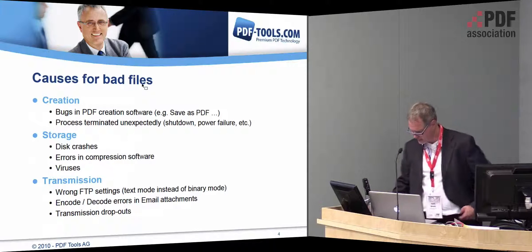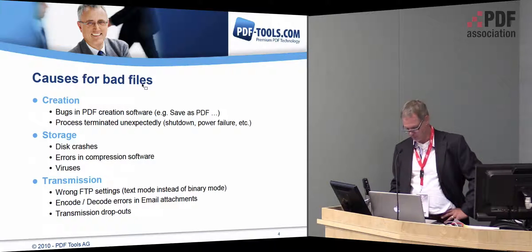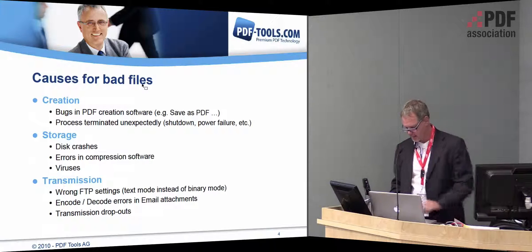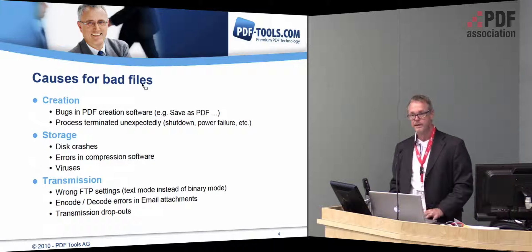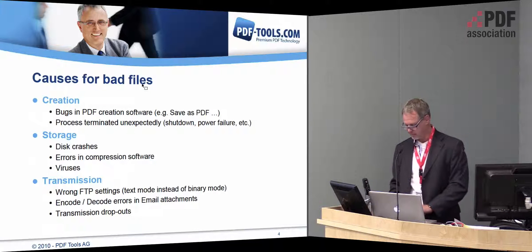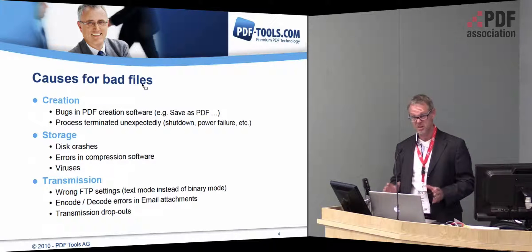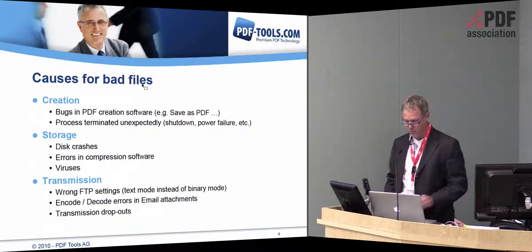If the repair tool is aware of the nature of corruption, it can carry out specific fixes. For systematic errors, if the creator software is known, the tool can find and fix typical errors such as missing mandatory directory entries, systematically wrong object structures, badly formatted fonts, and the like. For unwanted modification, a PDF file created in ASCII mode can have line breaks or carriage returns inserted without critical damage, but if created in binary mode, the stream object likely cannot be recovered.